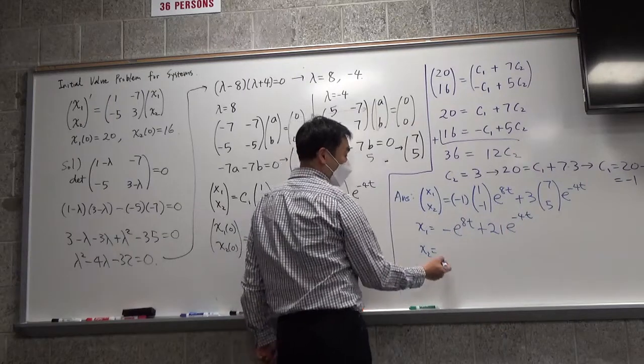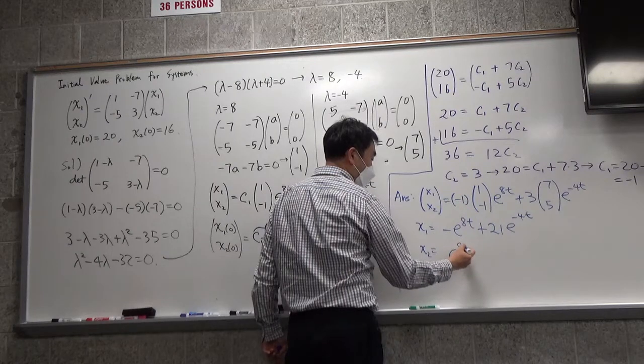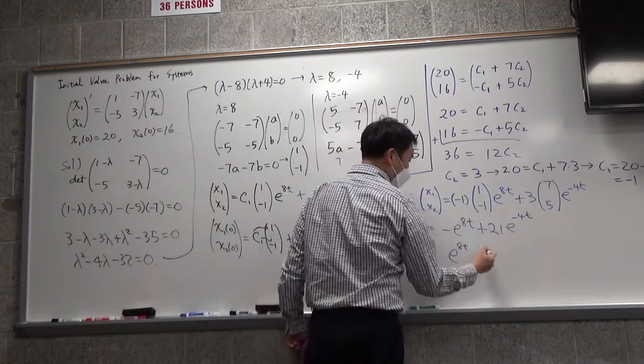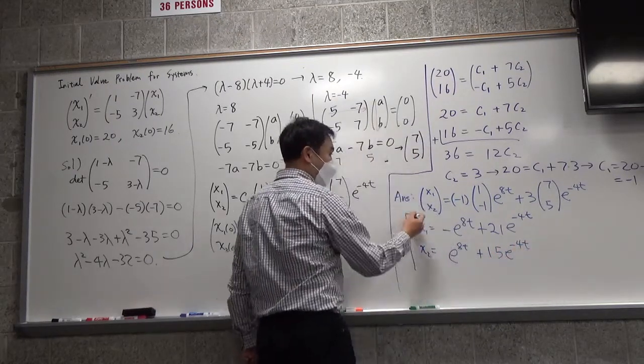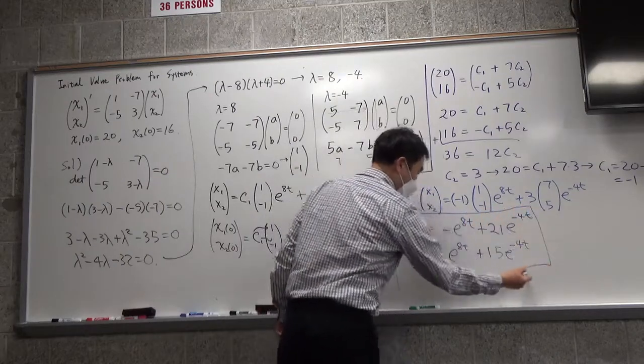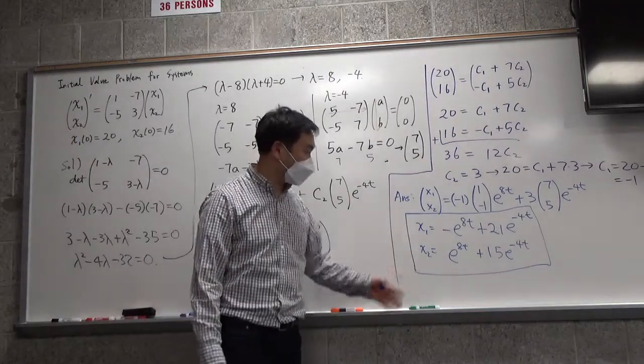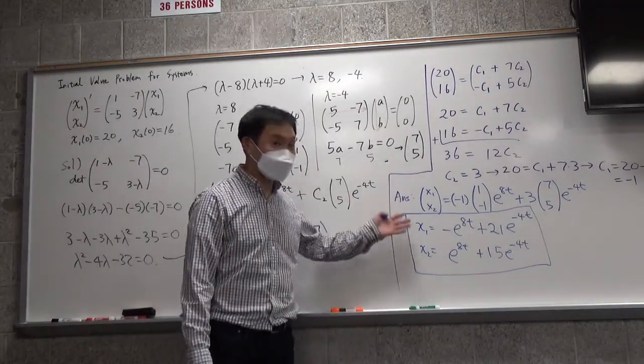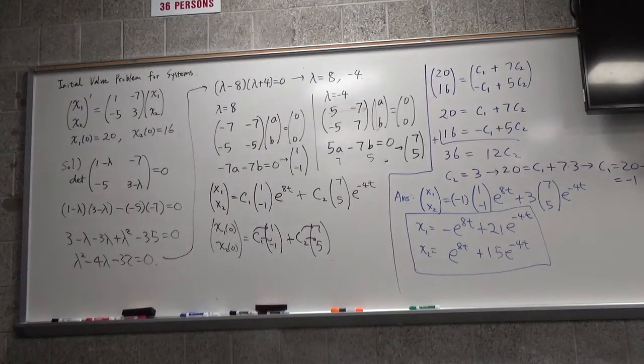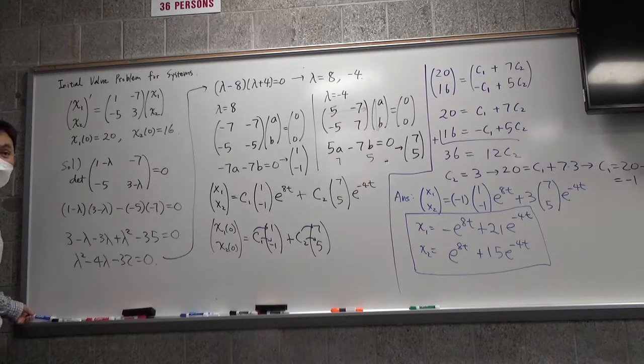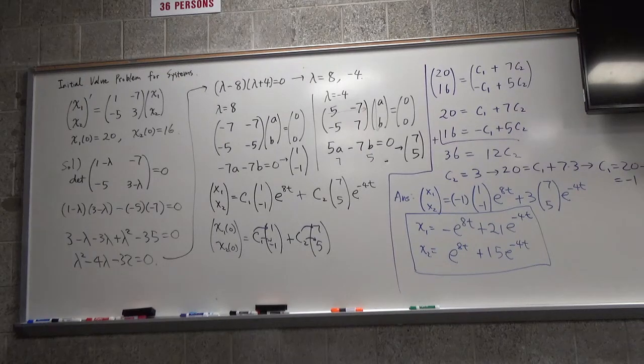Whereas X2 is what? Negative 1 times negative 1, that's positive 1, so that's e to the 8t, and then 3 times 5, that's 15 e to the negative 4t. So that is often the answer. Even during the exam, I would probably ask you to write your answer in this form, and if you stop just here, I'll take like one point off or something. So that's how you solve an initial value problem.